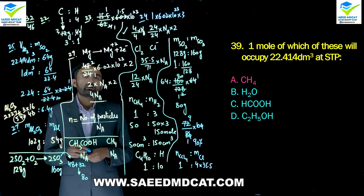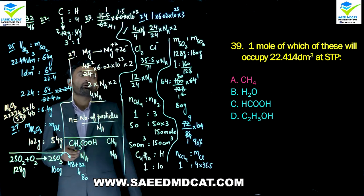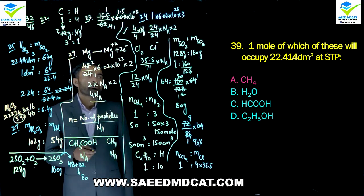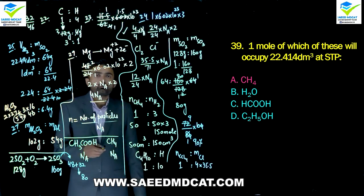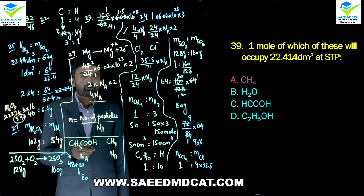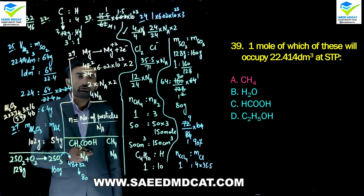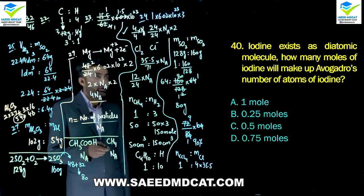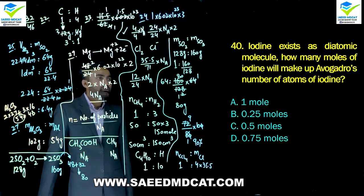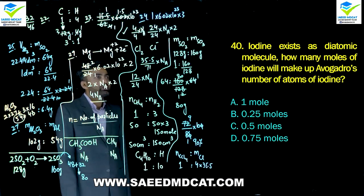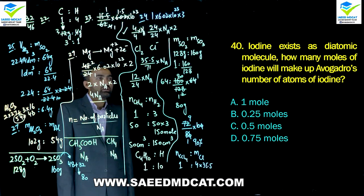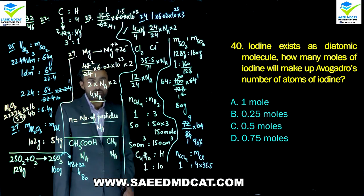Question 39: One mole of which substance occupies 22.414 dm³? The molar volume concept applies only to gases. Water is liquid at room temperature; formic acid is also liquid. Only alpha option (methane) is a gas at room temperature, so it occupies 22.414 dm³ per mole.